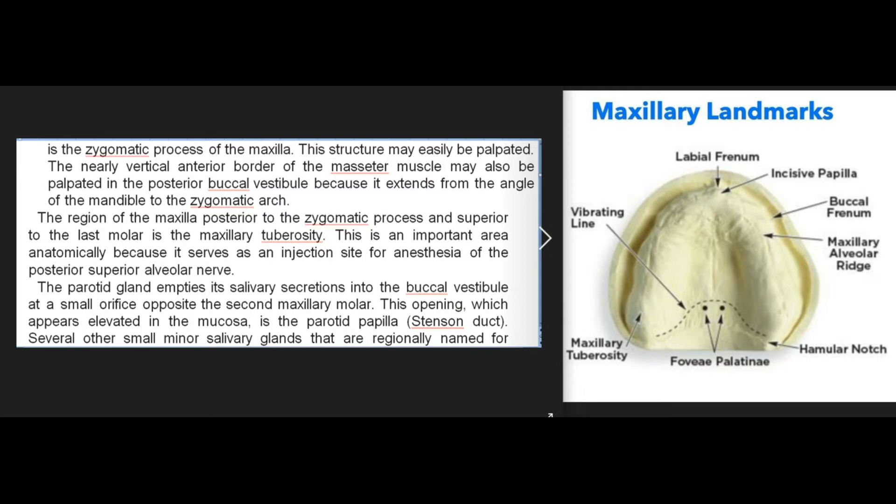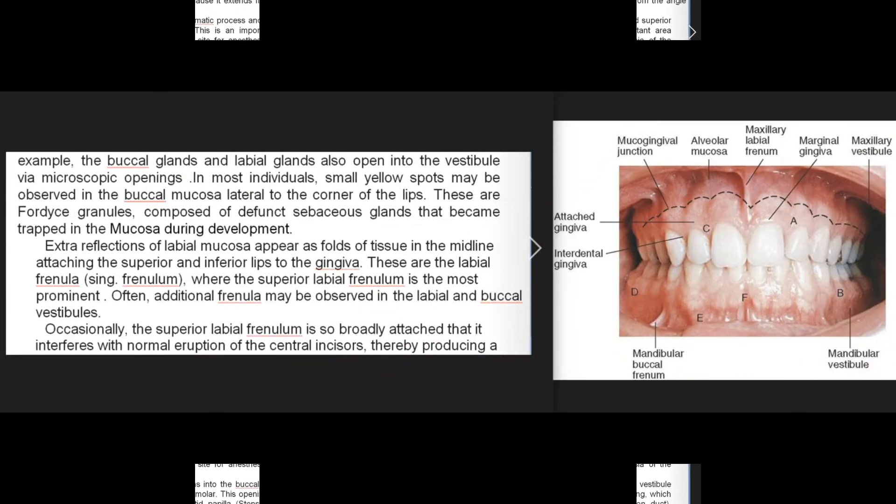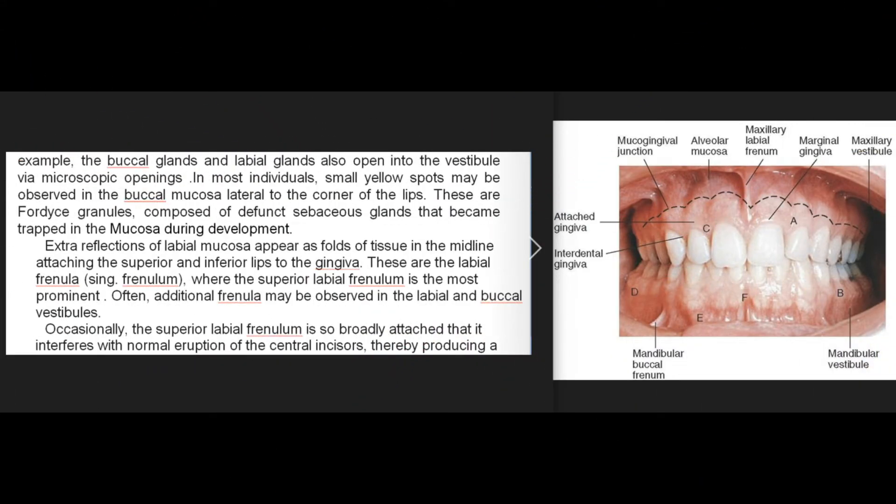The opening of the parotid duct (Stenson's duct), which appears elevated in the mucosa, is the parotid papilla. Several other small minor salivary glands that are regionally named — for example, the buccal glands and labial glands — also open into the vestibule via microscopic openings. In most individuals, small yellow spots may be observed in the buccal mucosa lateral to the corner of the lips.